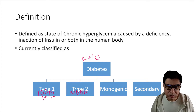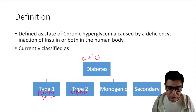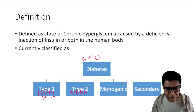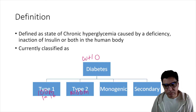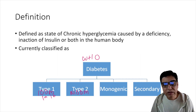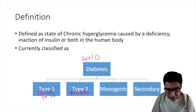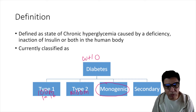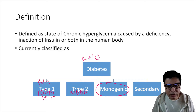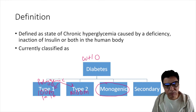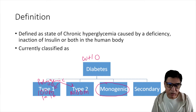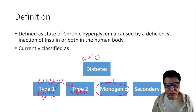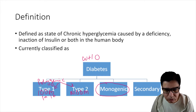Type 2 diabetes was previously known as non-insulin-dependent or adult-onset diabetes mellitus — now simply called Type 2 diabetes mellitus. They don't call it adult-onset because sometimes it can happen in younger age groups as well, though a bit rare. The third group is monogenic diabetes, caused by single gene defects.